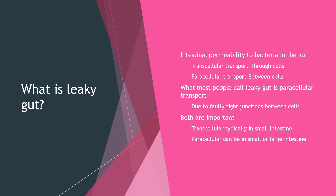There are two types of intestinal permeability. There is transcellular transport, which is through cells, and paracellular transport, which is between cells. What most people call leaky gut is paracellular transport — where two cells are held tightly together by tight junctions, and bacteria and food squeeze in between the cells.